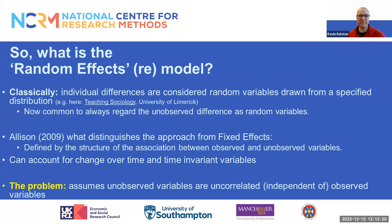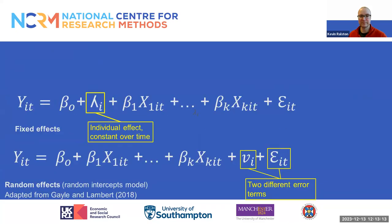So what is the random effects model? In a random effects model, individual differences are considered as random variables drawn from a specified distribution, and it is now common to always regard the unobserved differences as random variables. Allison argues that what distinguishes the fixed effect from the random effect is defined by the structure of the associations between observed and unobserved variables, and that a random effect model can account for change over time and time-invariant variables. But this leads to a problem.